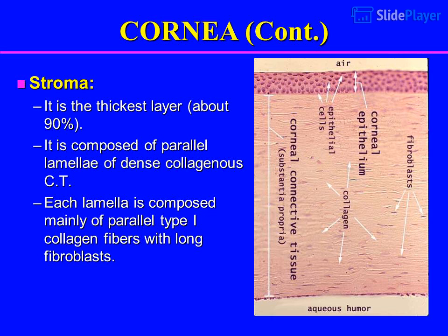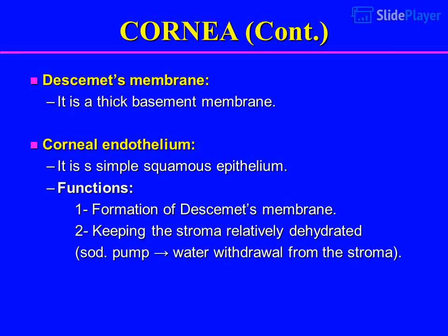Corneal stroma: it is the thickest layer, comprising about 90% of the cornea. It is composed of parallel lamellae of dense collagenous connective tissue. Each lamella is composed mainly of parallel type I collagen fibers with long fibroblasts.